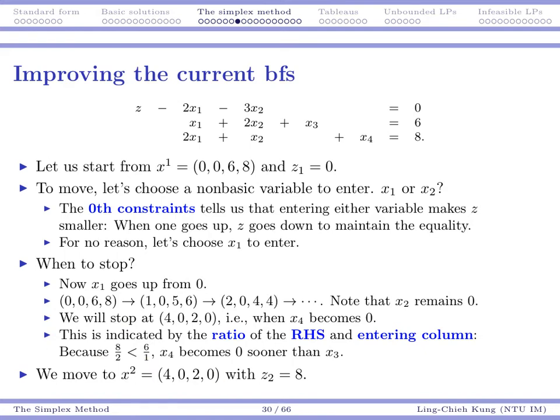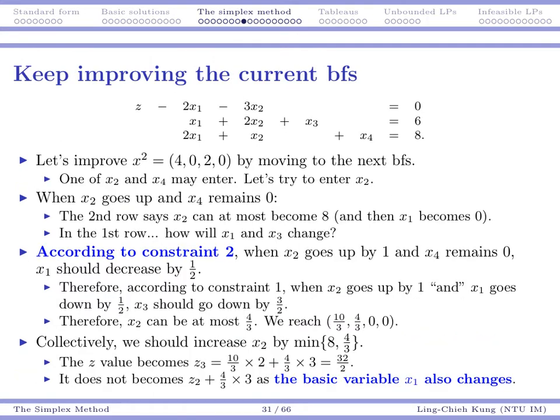So far so good. And we may move to another solution, 4, 0, 2, 0. So if you plug in 4, 0, 2, 0, your z would be 8. That's the second basic feasible solution, which is indeed better than the previous one.